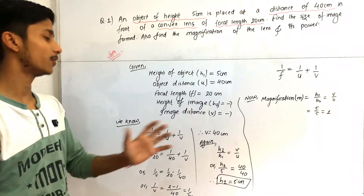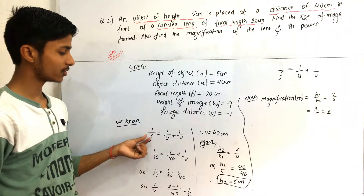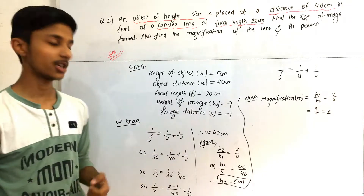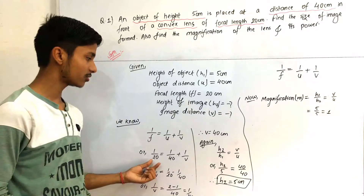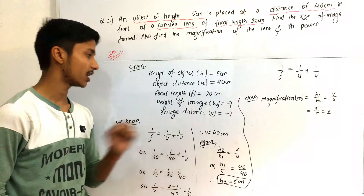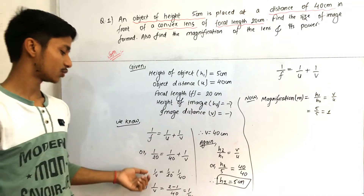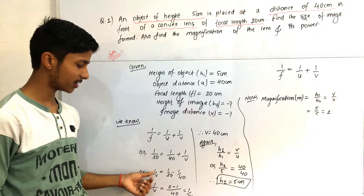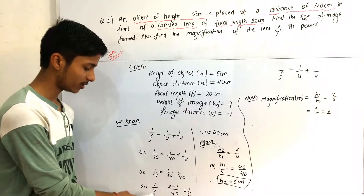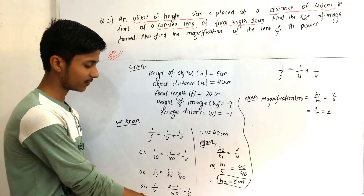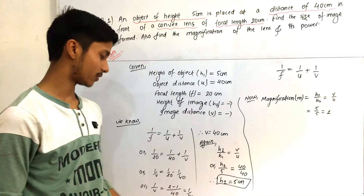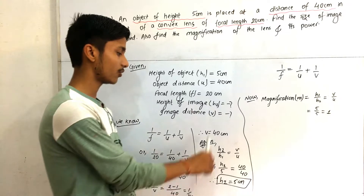To recap: we used the formula 1/f = 1/u + 1/v, substituting focal length 20 and object distance 40 to calculate image distance v. We found 1/v = 1/20 − 1/40 = 1/40, giving v = 40 centimeter. Then using magnification = h2/h1 = v/u, we found height of image h2 = 5 centimeter and magnification = 1.